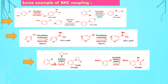Lastly, another example of coupling: this is an amine, this is palladium as catalyst, this is an aryl halide, in the presence of base we get the coupled product here. This is all about the examples of BHC coupling.